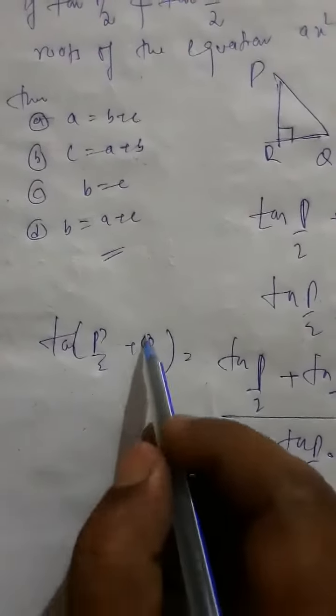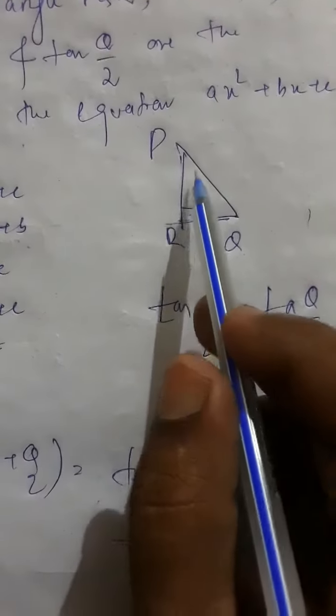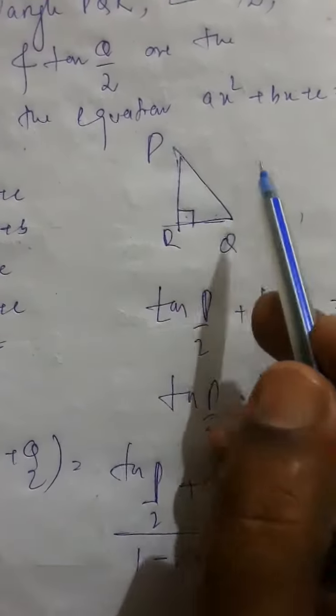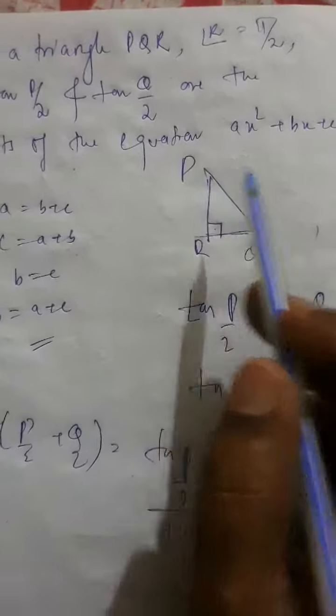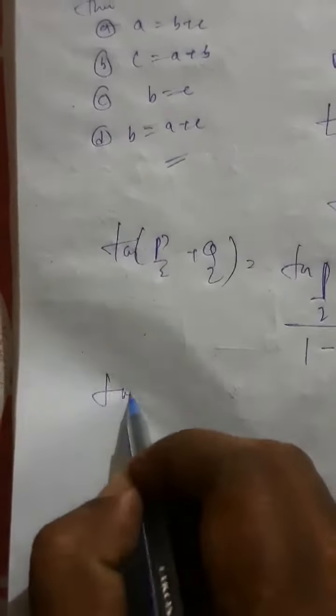Now, we know tan of P by 2 plus tan of Q by 2. If we see this triangle, R is 90 degree, which means P plus Q is also 90 degree. This means P by 2 plus Q by 2 will be 45 degree. So this will be tan 45 degree, or tan of pi by 4.